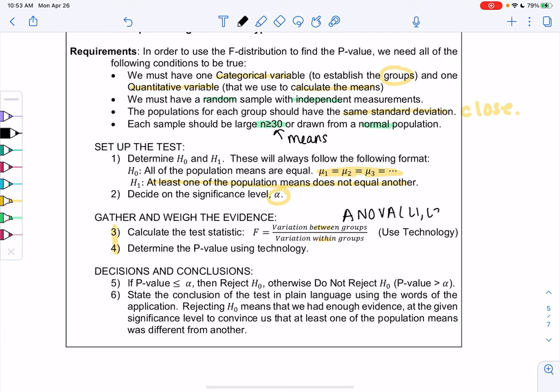I'll show you that in the example. And then StatCrunch can also do this step for us. And then five and six, nothing has changed. Five is reject or do not reject, step six is write a sentence. So five and six should all feel the same, just like all the hypothesis tests. It's just step three and four that keep changing. So we'll do an example in the next video and make sense of all this.